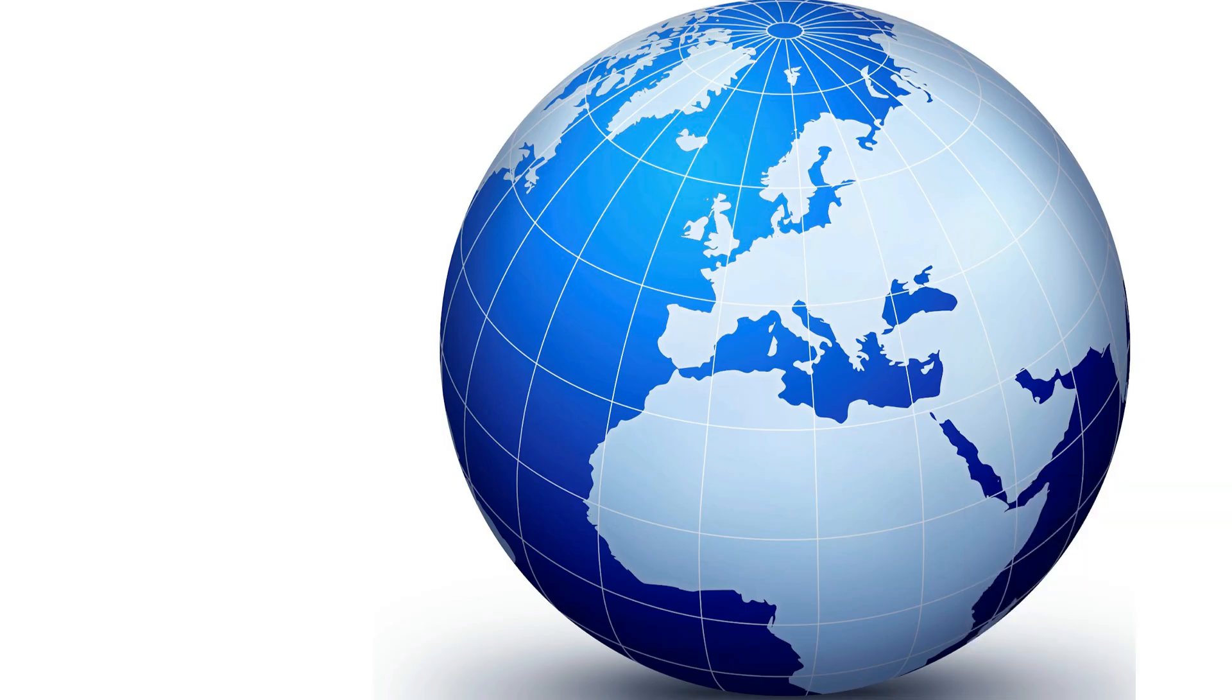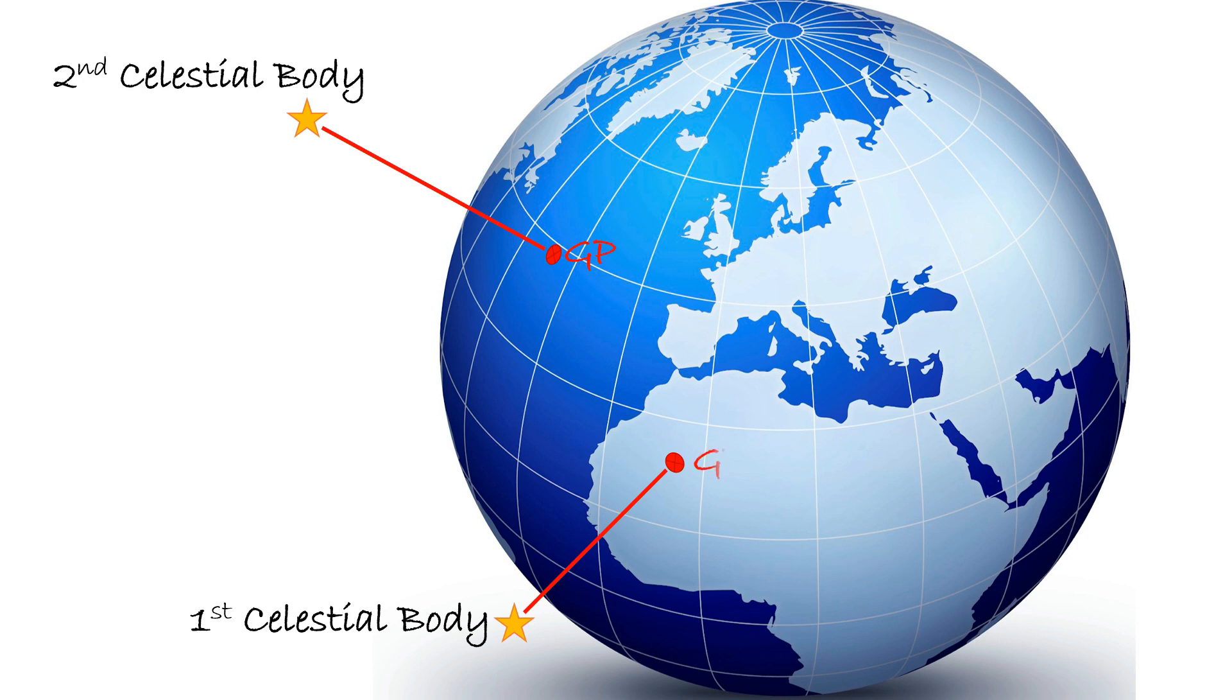At any given moment, every celestial body may be mapped to the Earth, as there is one point in the terrestrial sphere where the celestial body lies directly overhead. This is called the celestial body's geographic position, or GP. If you were standing at the geographic position, the celestial body would be directly overhead, known as the zenith.